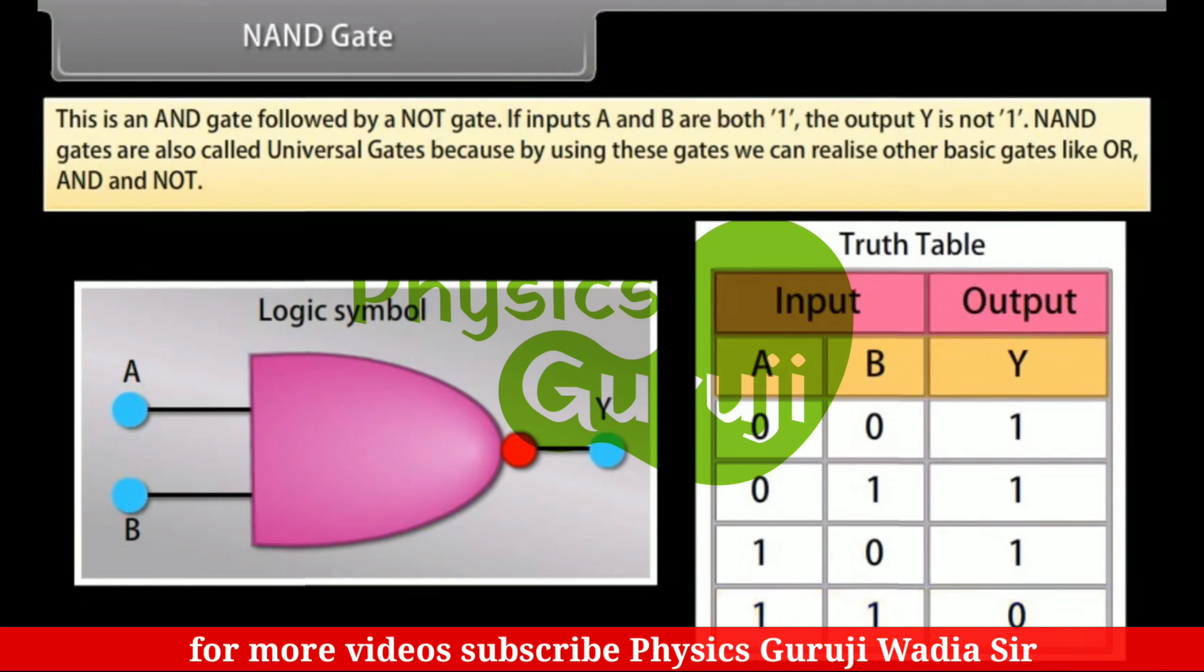NAND-Gates are also called universal gates because using these gates, we can realize other basic gates like OR, AND and NOT.